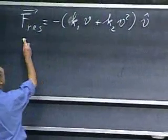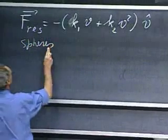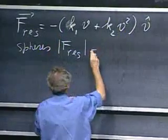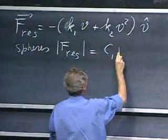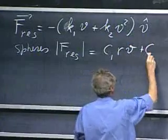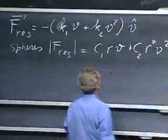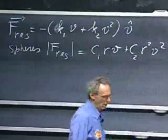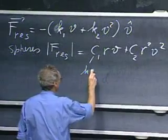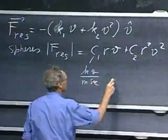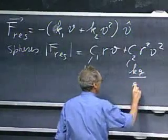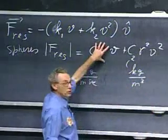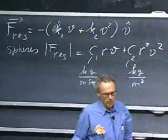When we deal with spheres, the magnitude of the force equals c1 times r times the speed plus c2 times r squared times v squared, and it's always opposing the velocity vector. C1 in our units is kilograms per meter per second, and c2 has the dimension of density — kilograms per cubic meter.